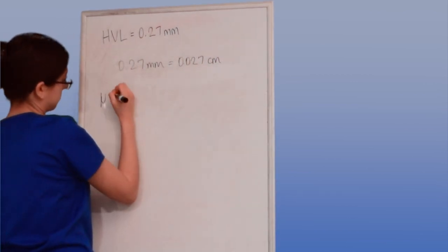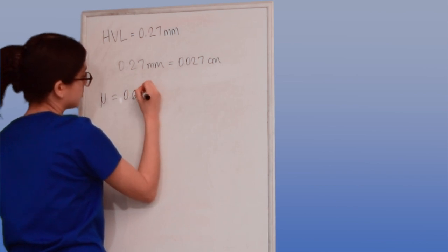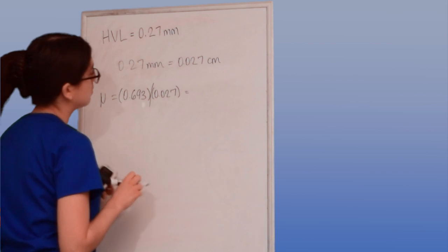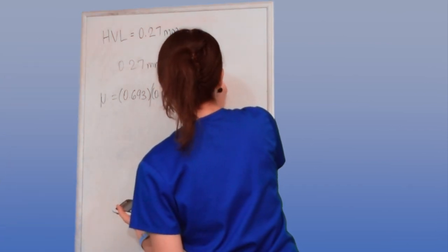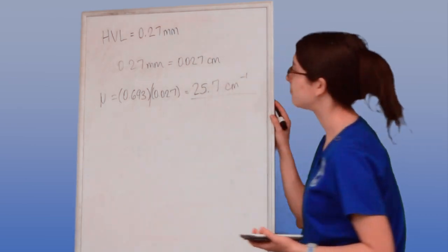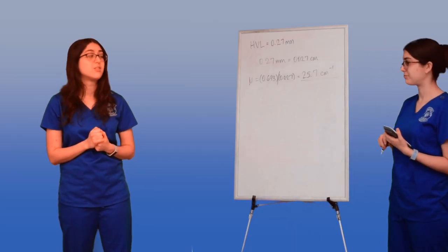So I knew it was 0.27 millimeters. Let's convert that to centimeters, which is 0.027 centimeters, and then solve. So 0.693 divided by 0.027, and we get 25.7. Linear attenuation coefficient is 25.7.